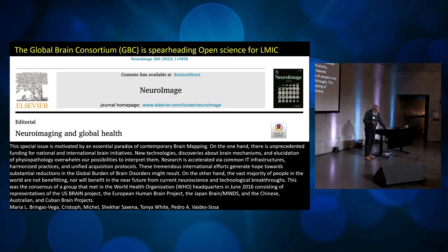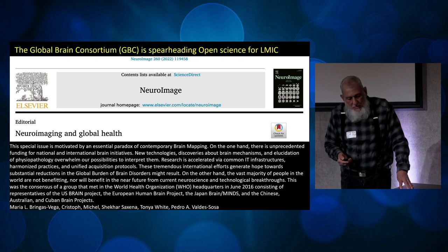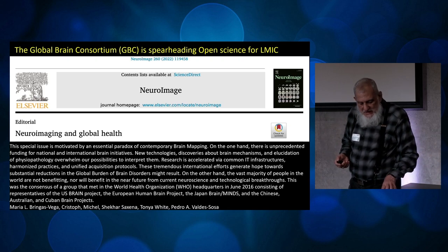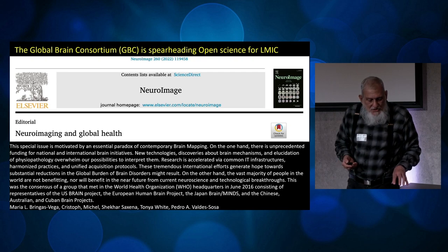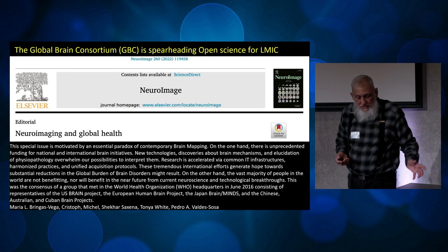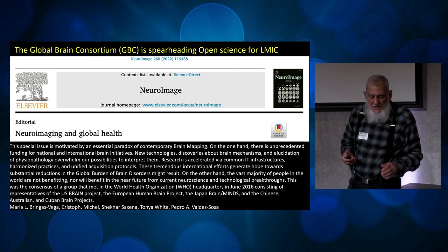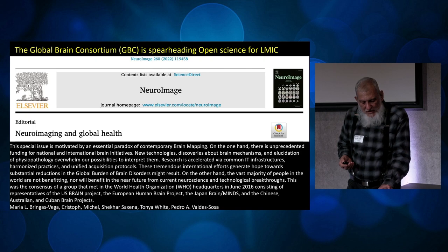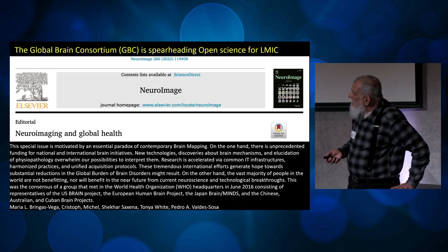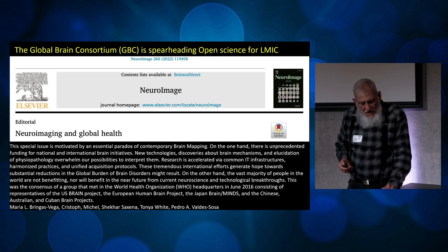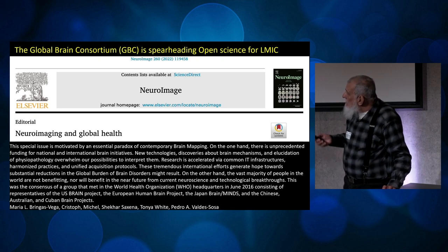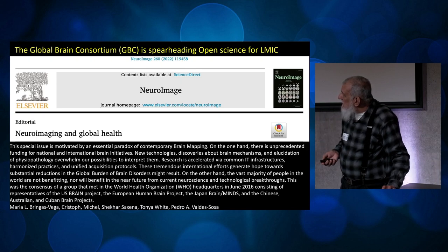What is the motivation? The motivation — and this is the motivation of the Global Brain Consortium — is that there's a need for imaging modalities that can be used in any population with disadvantage. We usually think of lower- and middle-income countries, but it can also be disadvantaged populations within higher-income countries. The GBC has been moving in this direction; there's even an editorial from a special issue on neuroimaging and global health, which I recommend you look at.